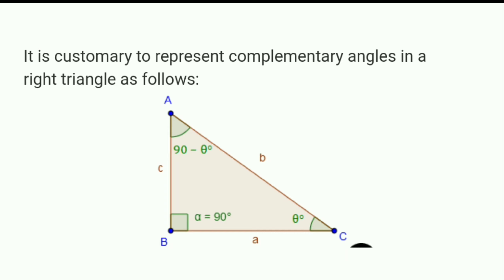It is customary to represent complementary angles in a right triangle as follows: if angle B is 90 degrees and angle C is theta, then angle A will be 90 minus theta, because both are complementary angles. Similarly, if angle C is x degrees, then angle A will be 90 minus x, because the sum of angle A and angle C is 90 degrees.